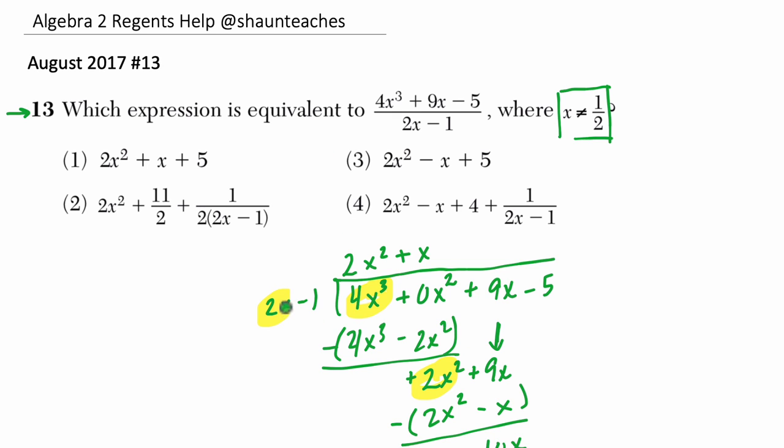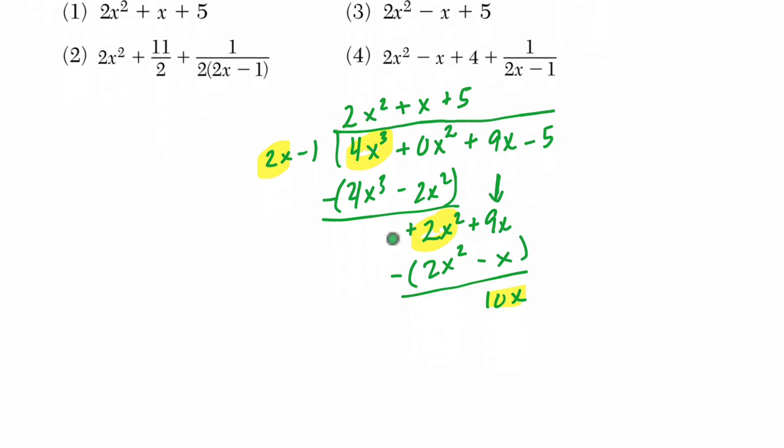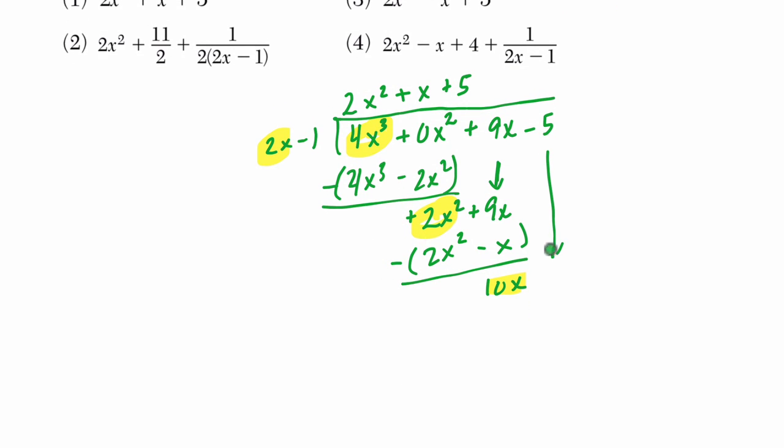Now we say how many times does 2x go into 10x? Right? So it's going to be 2 goes into 10 five times, and x goes into x one time, which is 5. Now we distribute the 5 on the 2x minus 1. Bring down this negative 5 right here, and 5 times 2x minus 1 is just 10x minus 5. We subtract these two and have no remainder. They divide evenly. That brings us to choice 1.